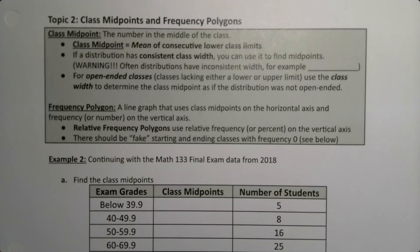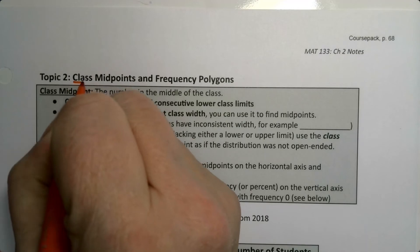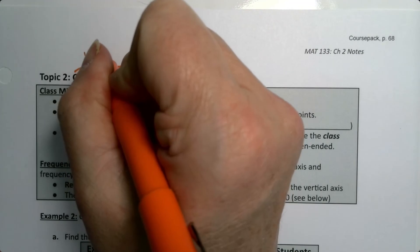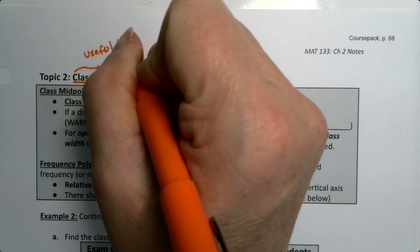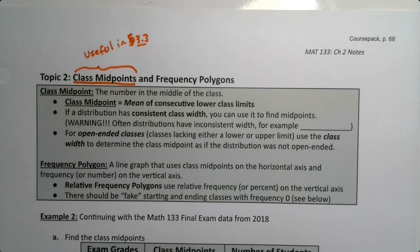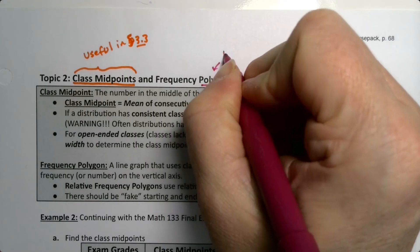In topic number two we want to talk about class midpoints and frequency polygons. Class midpoints are the number that's in the middle of the class, and this is definitely something you will see again. We need this particularly in section 3.3, but it's actually used in many places throughout the course. Frequency polygons are a fancy way of saying line graphs — that's what it is.